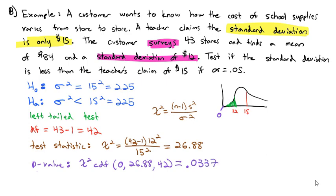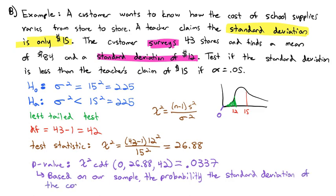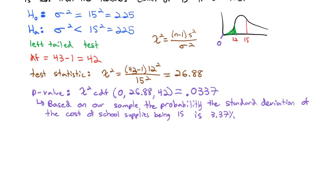0.0337. That p-value tells us that based on our sample, the probability that the null hypothesis is true, that the standard deviation of the cost of school supplies being 15 is 3.37%. There's a 3% chance that that null hypothesis is true.